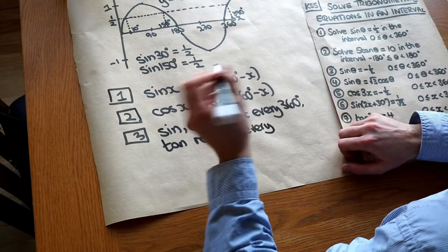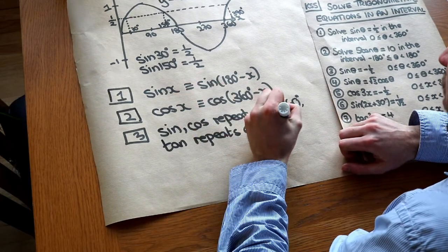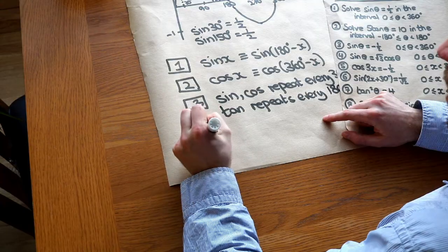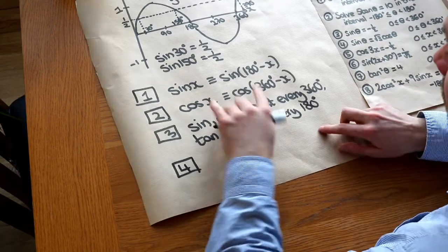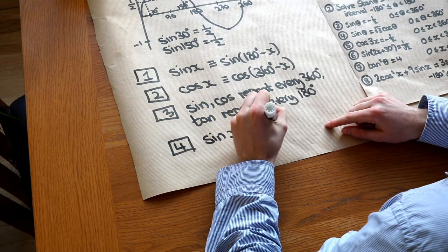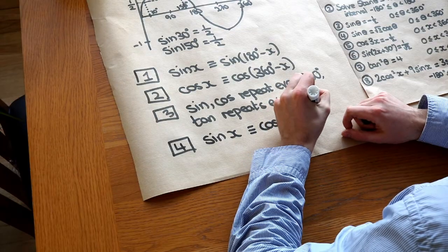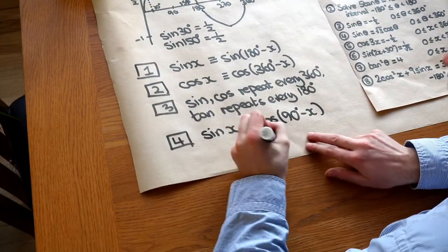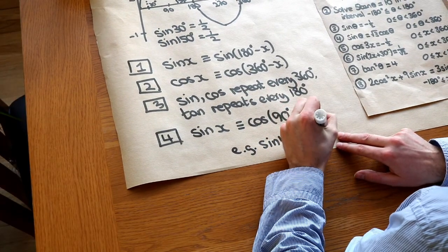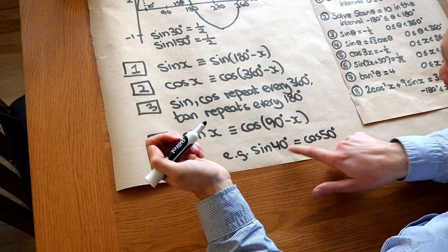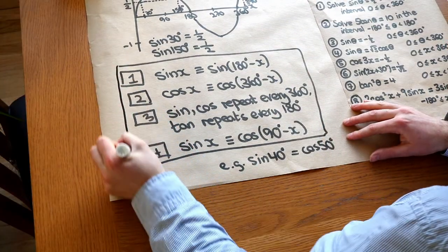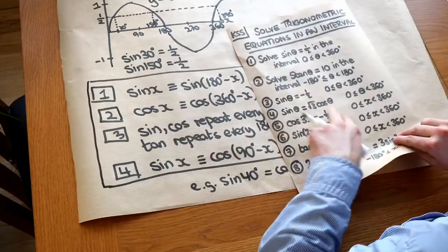So if we had a solution to a tan equation, we could just add 180 to it to get another solution, and another 180, and so on. There's a final trig identity — sine of x equals cos of 90 minus x. For example, sine of 40 is the same as cos of 50, just like sine of 30 is the same as cos of 60. So these are the four key trig identities we're going to use for all these questions.